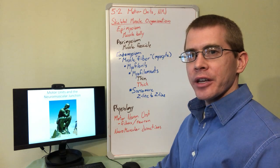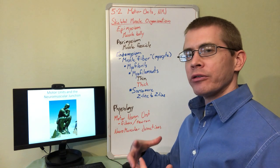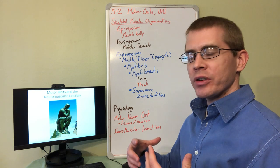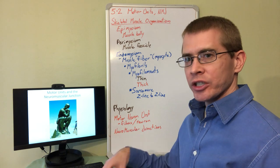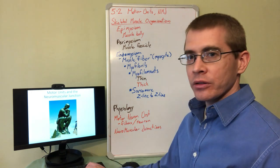All right everyone, this is lecture 5-2. Here we're talking about the structure and organization of muscles, as well as parts of their function including their excitability and contraction, as well as the neuromuscular junction.